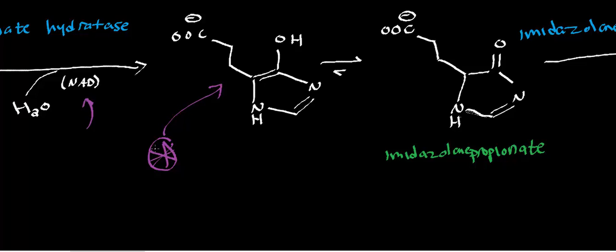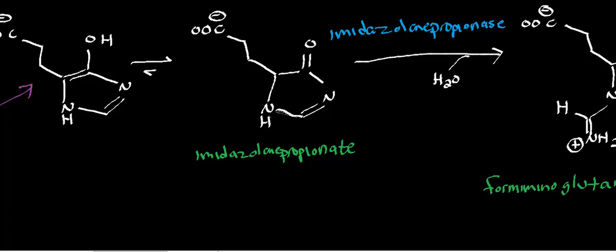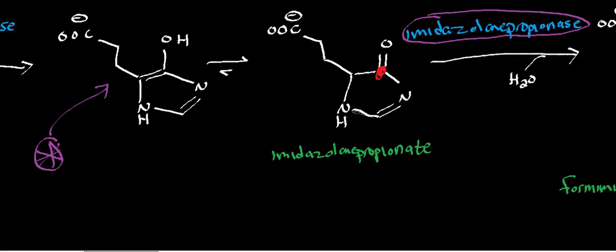It's pretty handy that it tautomerizes because we're going to have a serine hydrolase activity that's going to cleave open the ring. The serine hydrolase is imidazolin propionase, and it's a serine hydrolase that's specifically going to target this carbon right here for nucleophilic attack. It's going to do the nucleophilic acyl substitution on that carbon.